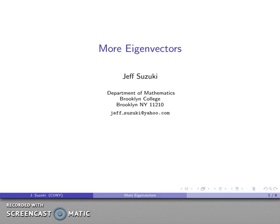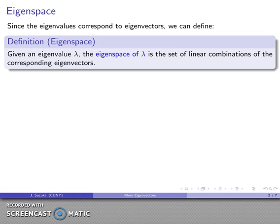As always, whenever you give a mathematician a new object, the first question they ask is, what can we do? And so the first thing we do is we define what's called the eigenspace.